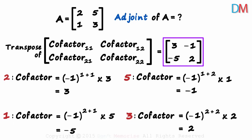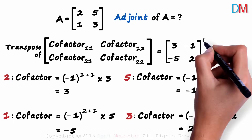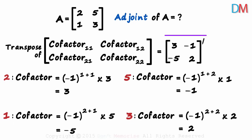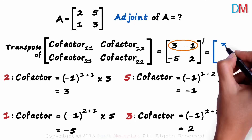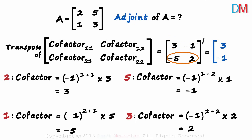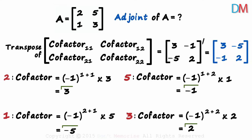We have to find the transpose of this matrix, so we mark a slant line here — this will be the adjoint of A. Remember, to find the transpose of a matrix, we interchange the rows and the columns. The first row becomes the first column: 3, minus 1. And the second row becomes the second column: minus 5, 2. That's the adjoint of matrix A. Find the cofactors first and then find the transpose of the resulting matrix.